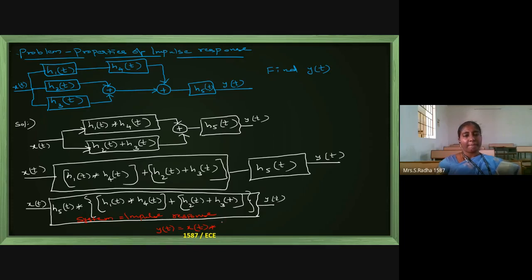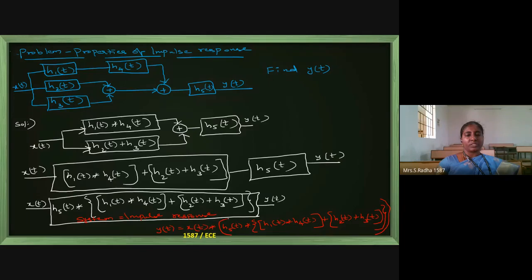So I will take the complete expression inside the block. H5 of T, convolution, open curly bracket — first term is H1 of T convolution H4 of T, second term is H2 of T plus H3 of T — close curly bracket, and also close the normal bracket opened before H5. This is the final output Y of T.